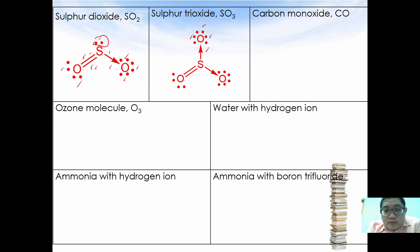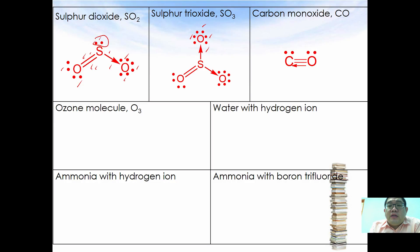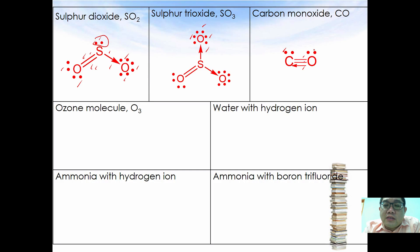Dative bond is also used in carbon monoxide to help carbon achieve octet arrangement. One of the lone pair electrons from oxygen is donated to carbon, which is why the arrow goes from O to C. By doing this, carbon achieves octet — two, four, six, eight — and oxygen also two, four, six, eight, forming a triple bond.